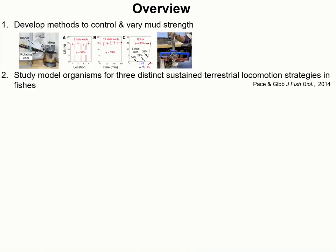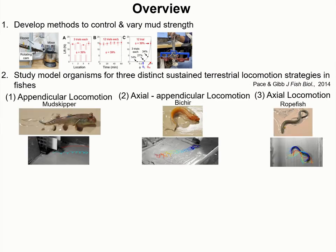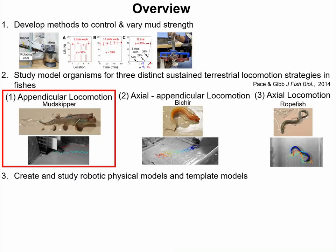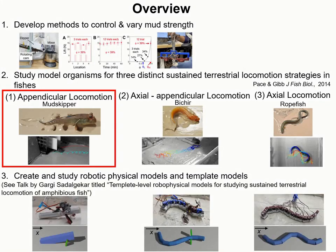We study three distinct sustained terrestrial locomotion strategies for which we choose model organisms. For appendicular locomotion, we choose the mudskipper. For axial-appendicular locomotion, we choose the lungfish. And for axial locomotion, we choose the eel. In this talk, I will focus more on the mudskipper results. Later in this session, there is another talk where we will focus more on the development of robot physical models and template models and how they can be used in studying sustained terrestrial fish locomotion.